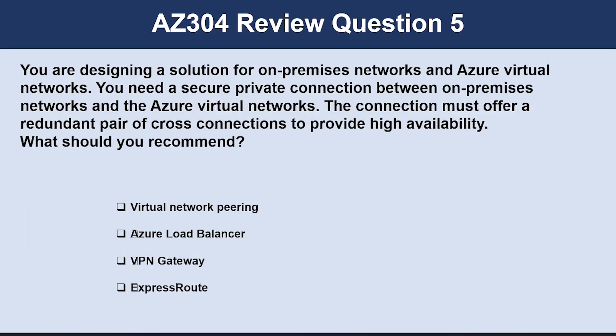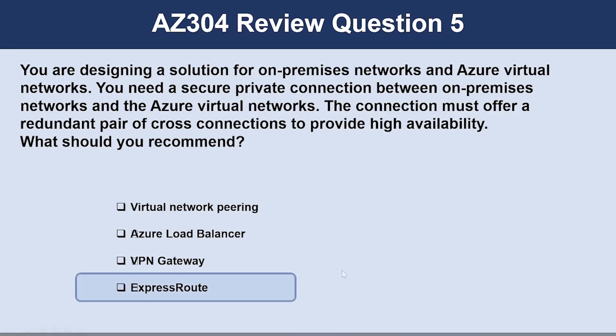Question number five. You are designing a solution for an on-premises network and Azure virtual networks. You need to secure a private connection between the on-premises network and Azure virtual networks. The connection must offer a redundant pair of cross-connections to provide high availability. What should you recommend? The correct answer is ExpressRoute. ExpressRoute allows connections between on-premises networks and Azure virtual networks.